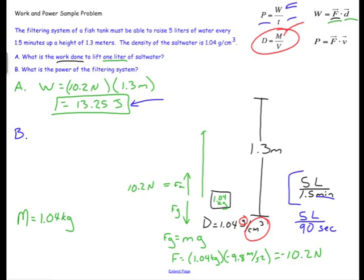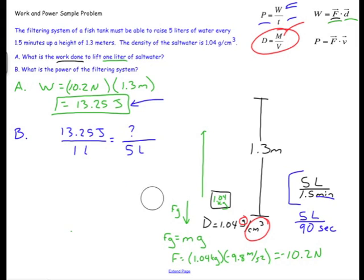Well the amount of work that I just found over here was all based on 1 liter if you recall. So if it takes 13.25 joules of work for 1 liter then it's going to take some unknown amount of work for 5 liters. And I simply just need to multiply that 13 number by 5. And I'll get 66.25 joules. So that's the amount of work that it takes per 90 seconds.